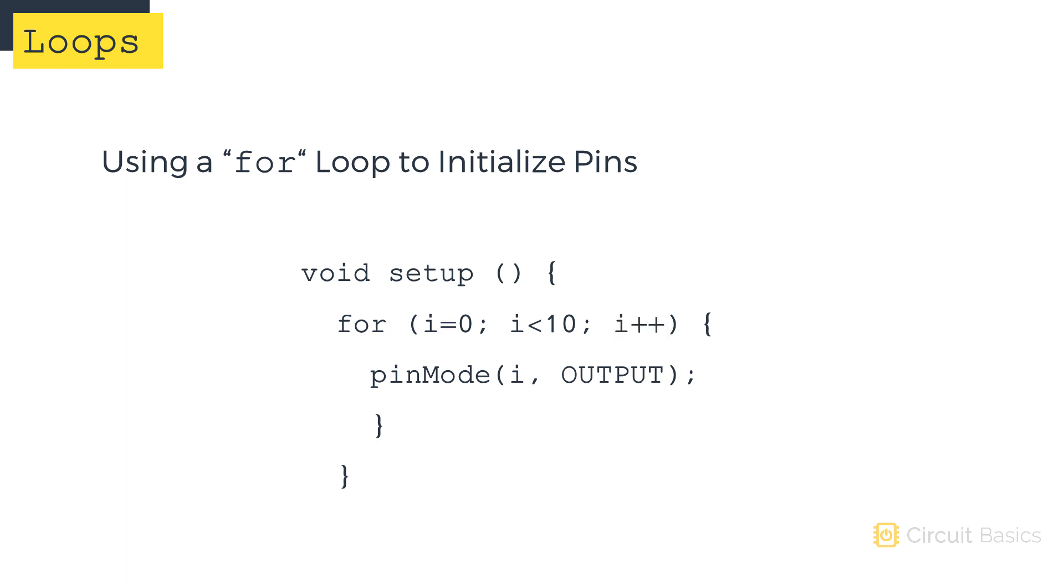So the first time through the loop, i will be set to zero. Zero is less than 10, so the condition is true, and the code in the body will be executed.